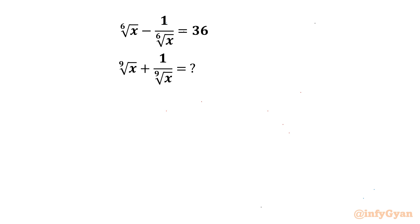Welcome back to Infigyan friends. In today's video we are going to take up another interesting and challenging question from Radical Maths. The given equation is 6th root of x minus 1 over 6th root of x, equal to 32. We have to evaluate 9th root of x plus 1 over 9th root of x.